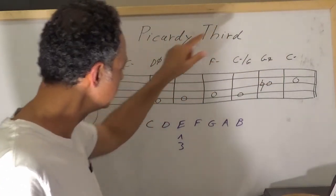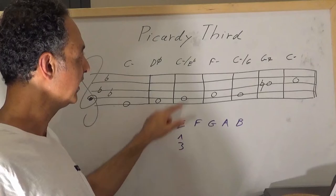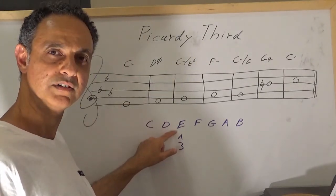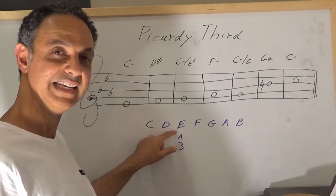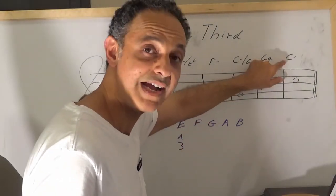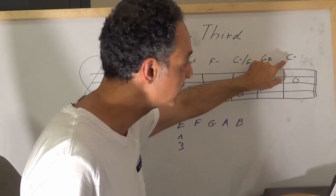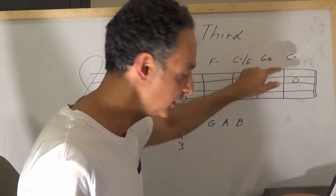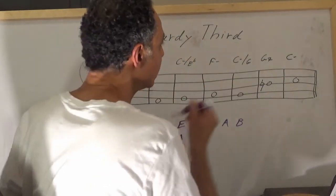So if we use scale degree number three, the third, scale degree number three from the parallel major, we are playing the E natural. So it's not going to be a C minor chord anymore, but it's going to be a C major triad instead. Let's write down C major triad.